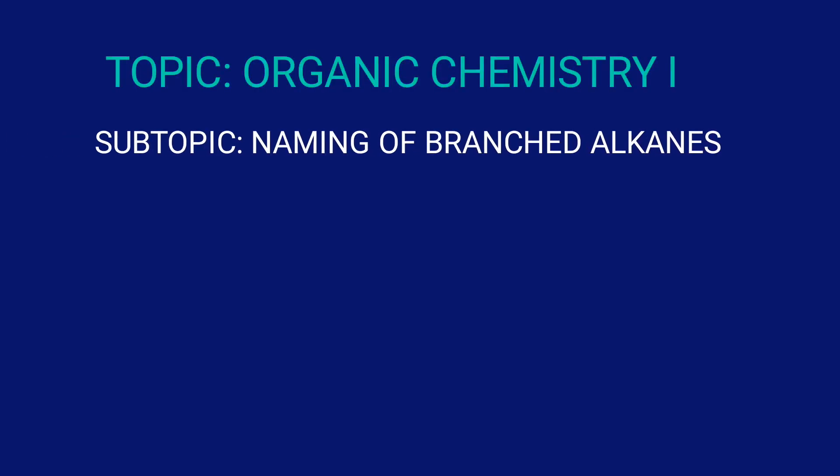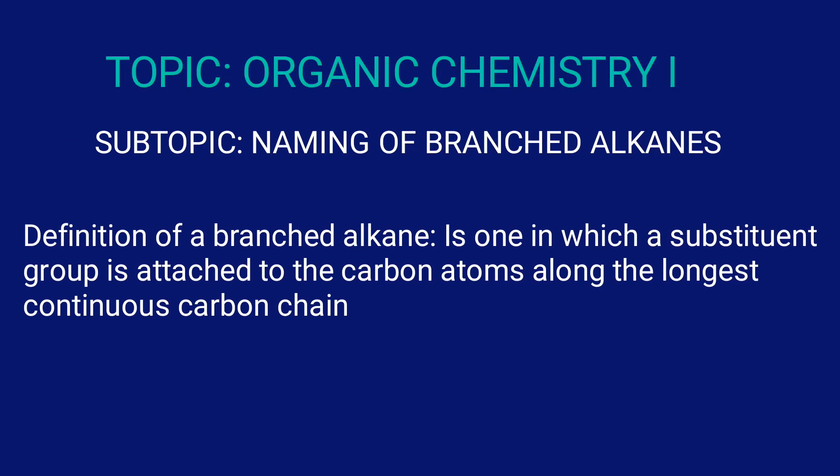Let's start by looking at what is a branched alkane. A branched alkane is obtained when substituent groups are attached to the carbon atoms along the longest continuous carbon chain.